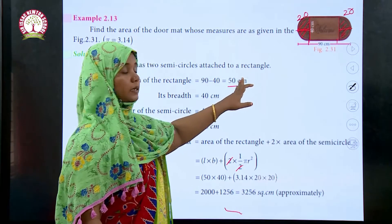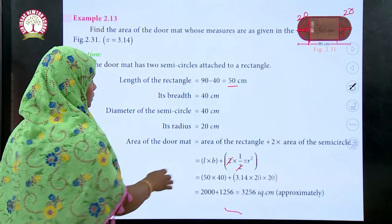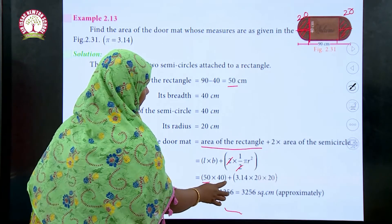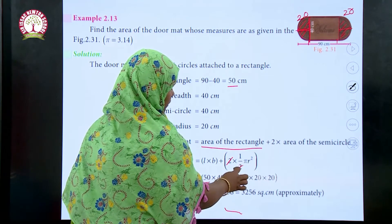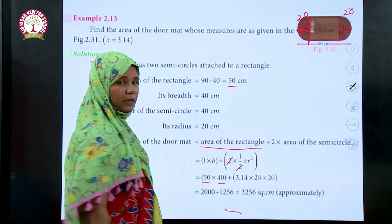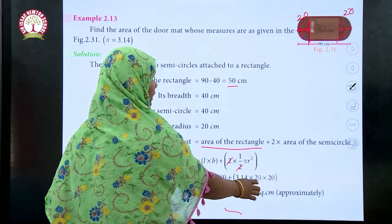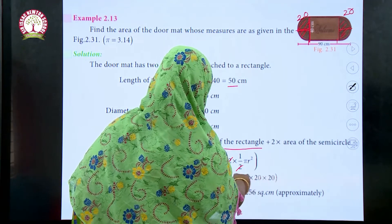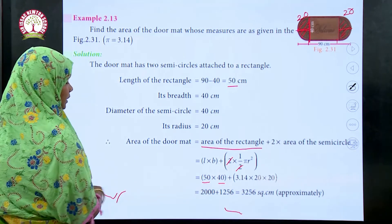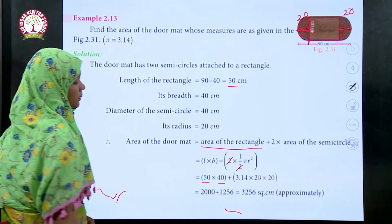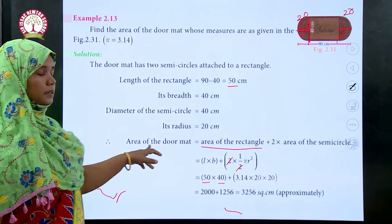Therefore, the length of the rectangle is 50 centimeters and its breadth is 40 centimeters. Area of the rectangle is 50 times 40, which is 2000. Then, the two and two cancel, leaving pi r squared. Substituting pi as 3.14 and r as 20: 20 times 20 is 400; 400 times 3.14 is 1256. Adding: 2000 plus 1256 gives 3256 centimeters squared.